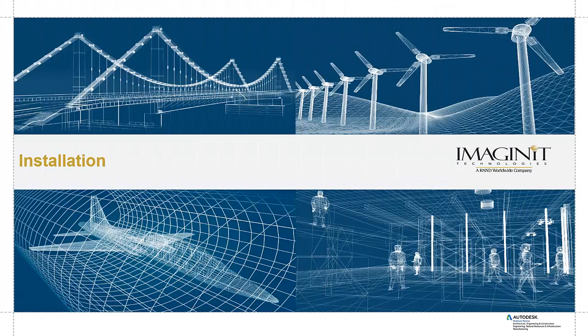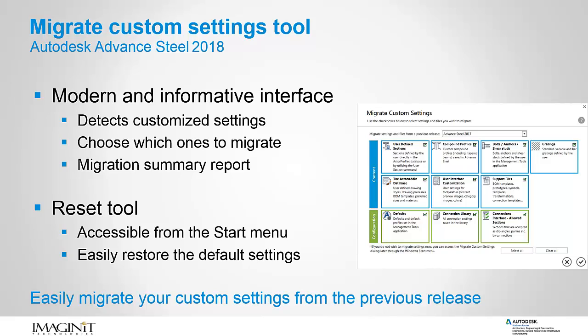Advanced Steel 2018 Installation Enhancements. The Migrate Custom Settings tool offers a modern and informative interface for migrating your custom settings and files from a previous release to Advanced Steel 2018. It helps detect and identify customized settings and lets you choose which ones to migrate. A summary report created from the migration offers comprehensive information in an easy-to-read format. If you change your mind, you can restore Advanced Steel default settings using the Reset tool available from the Start menu.